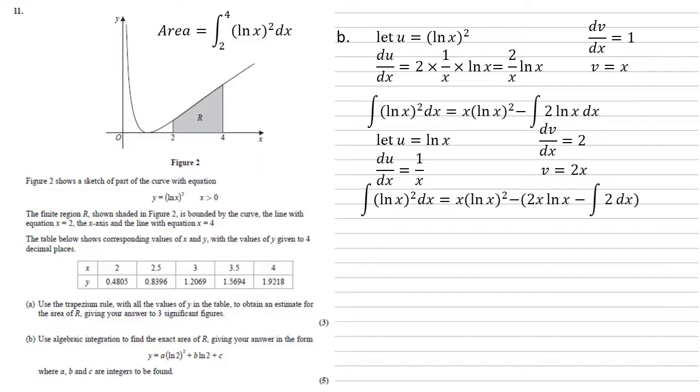So again, using our by parts formula, we've now got the x ln x squared which we had before. Now our second part becomes minus 2x ln x, so u times v, minus the integral of v du dx. All the x's will cancel, so that's the integral of 2 dx. Well, the integral of 2 dx is just 2x.